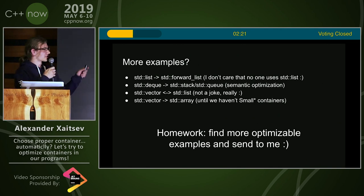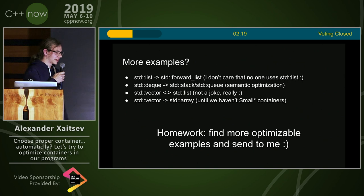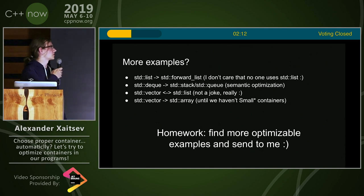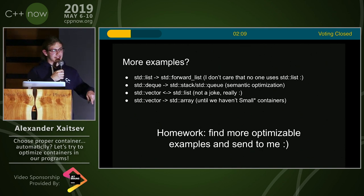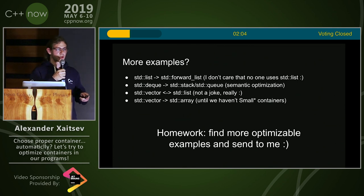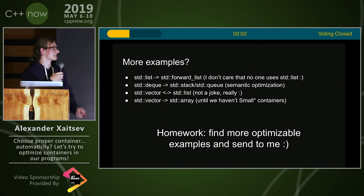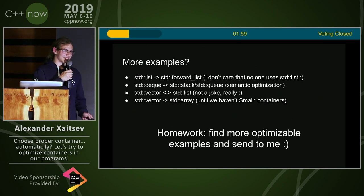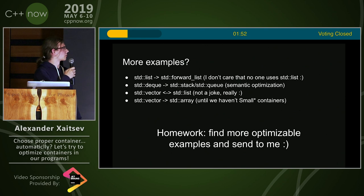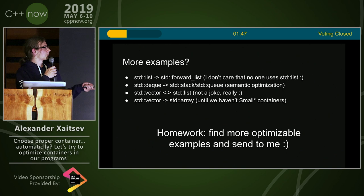More examples: we can optimize std::list to std::forward_list because of memory consumption issues; std::deque to std::stack or std::queue because of the mental model if we don't use deque-specific operations; vector to std::list — it's a little bit dangerous, but we can; and as shown before, std::vector to std::array to eliminate dynamic allocations.